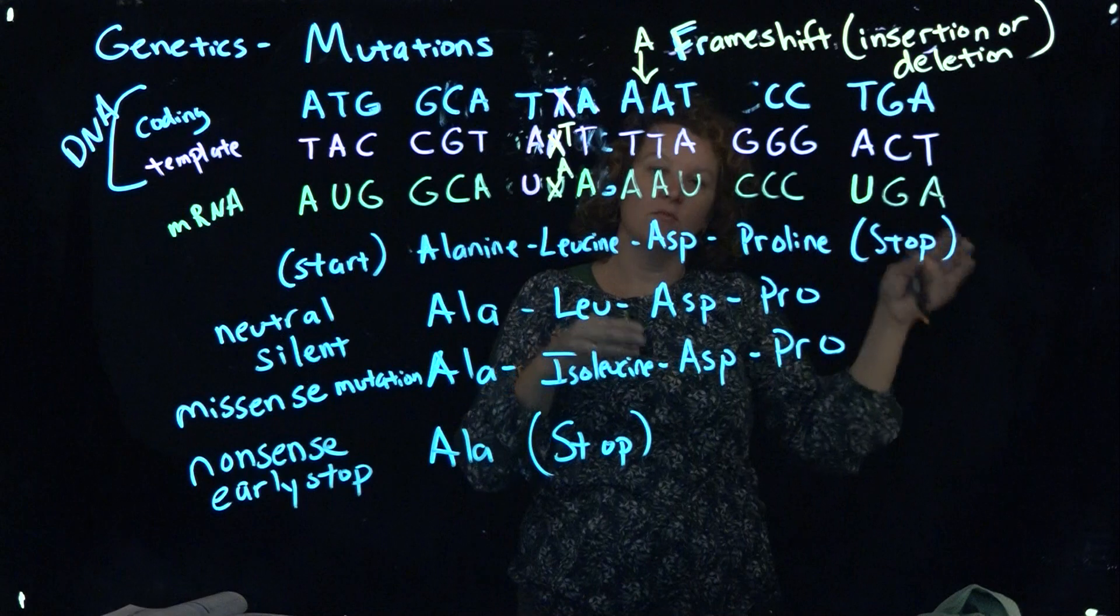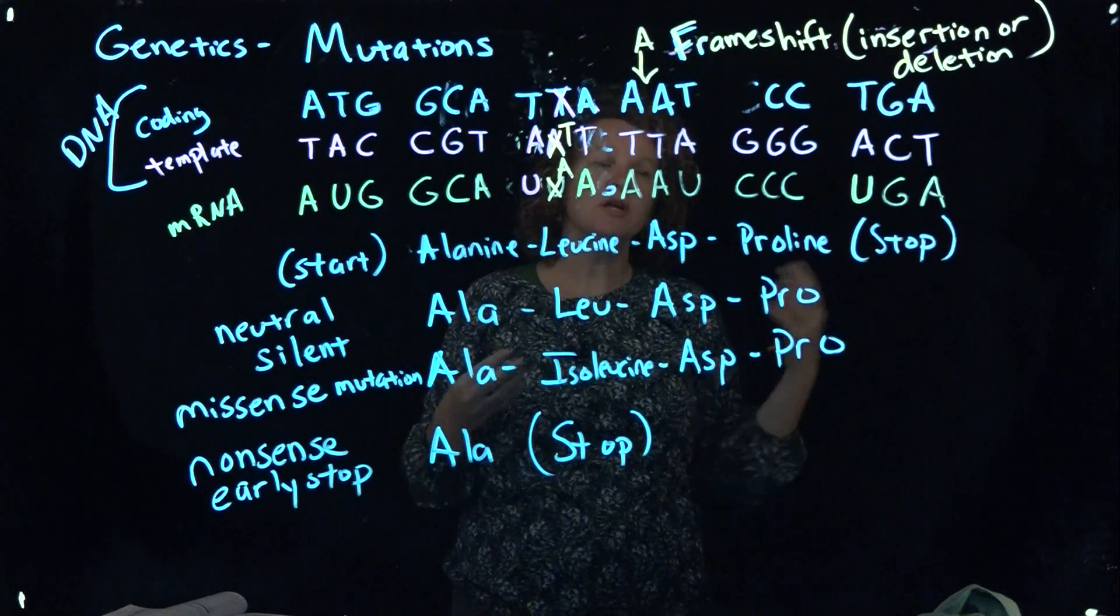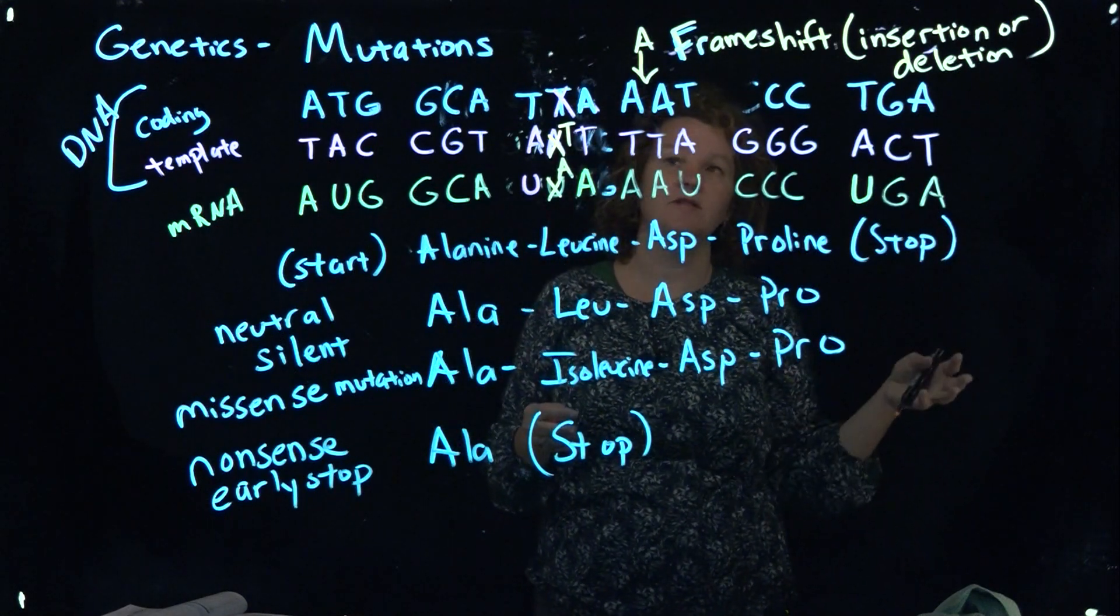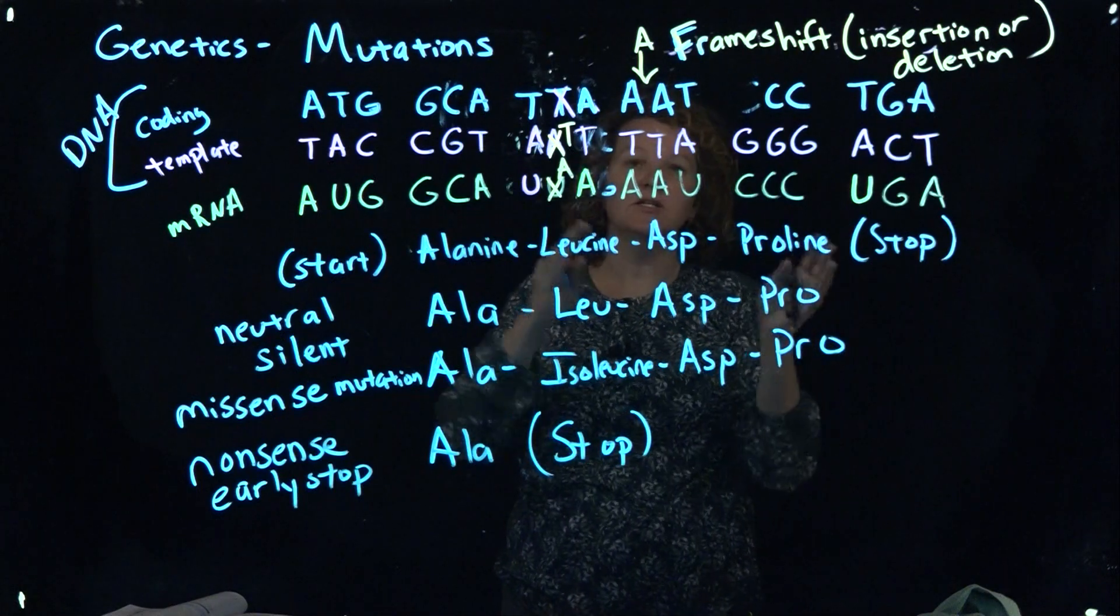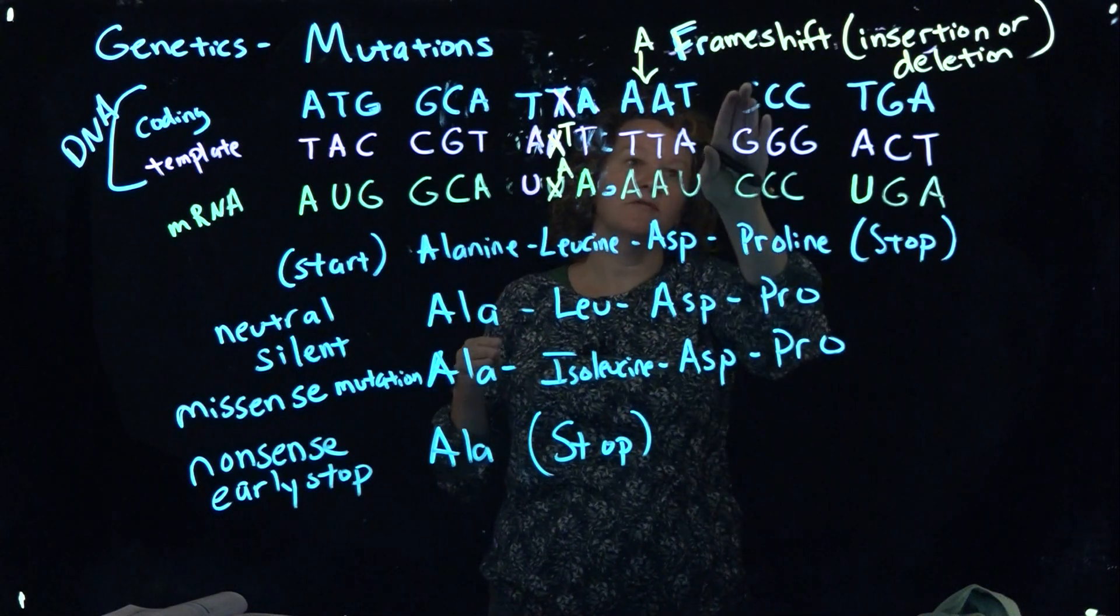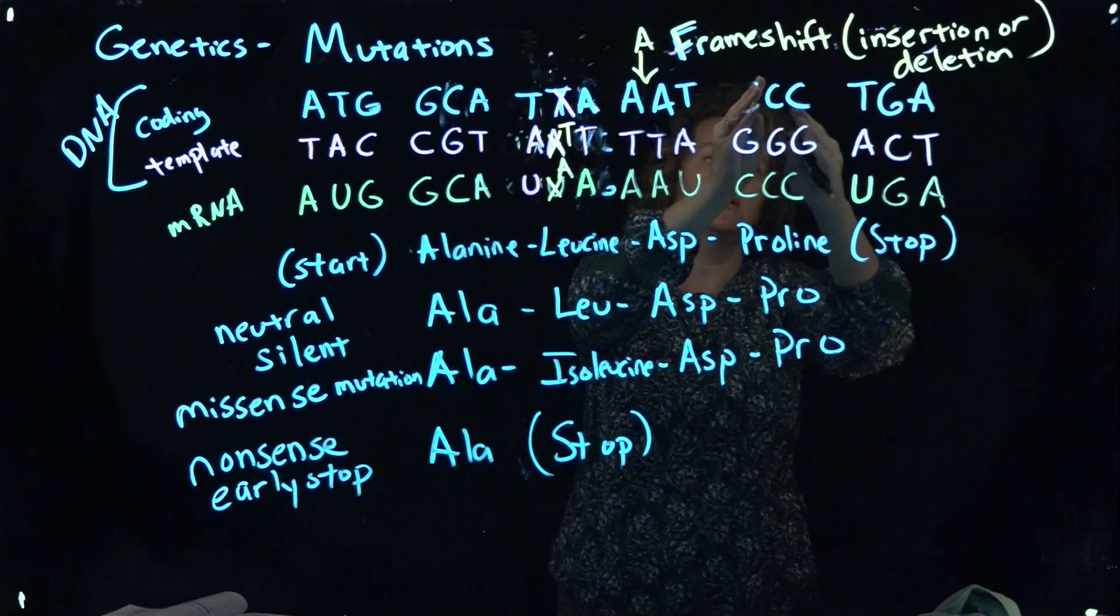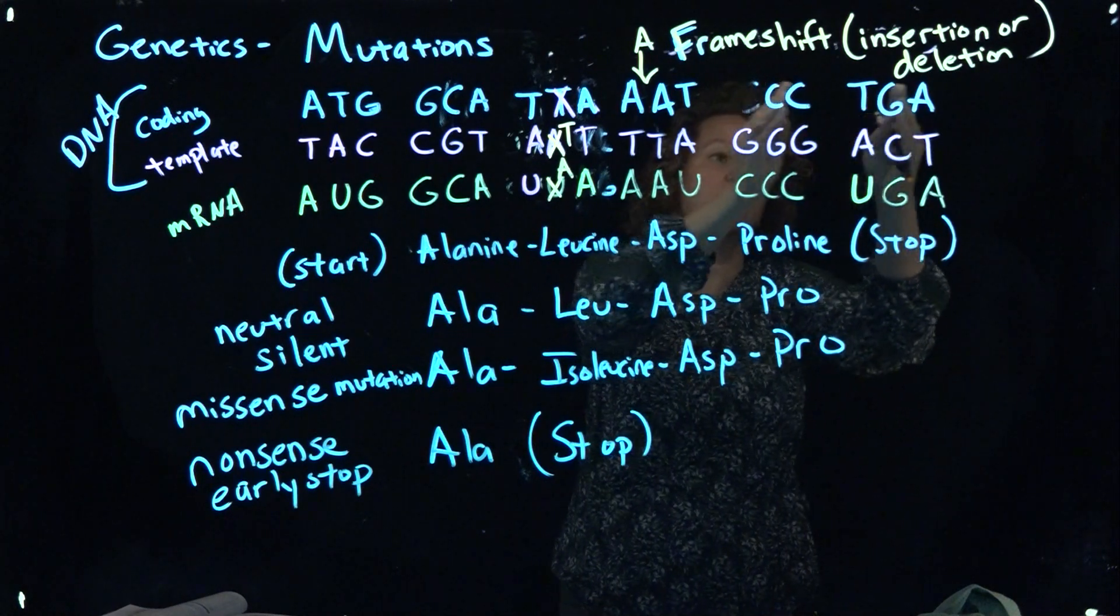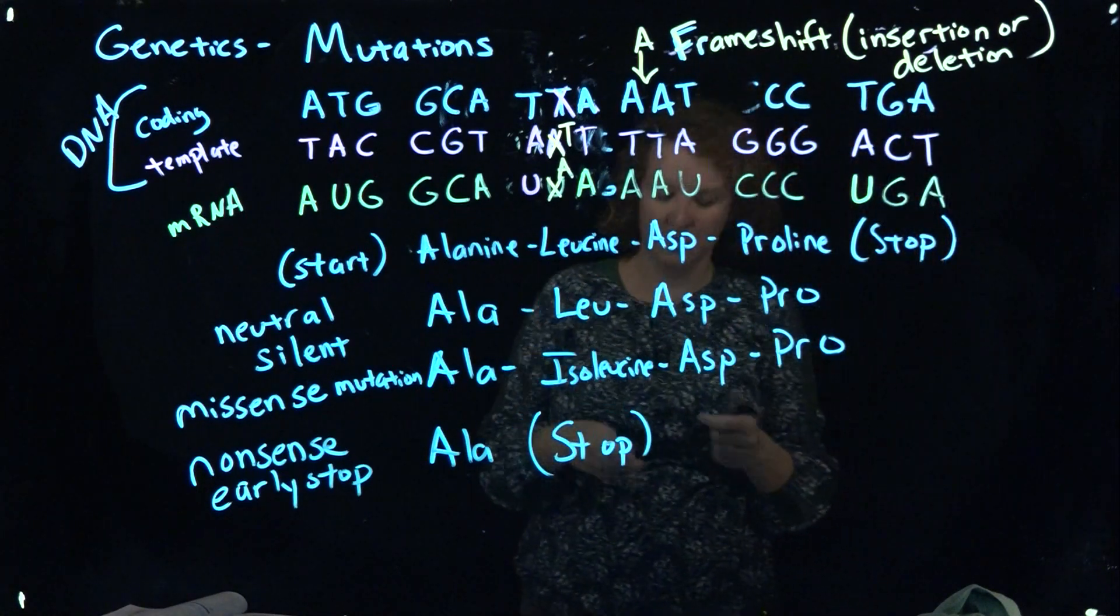In insertion, everything will kind of move down one, and you'll get an extra base hanging off at the end because you've added one. In a deletion, everything shifts backwards because if you've lost the base, now you would be reading one, two, three here. And you'll have a couple bases hanging over at the end.